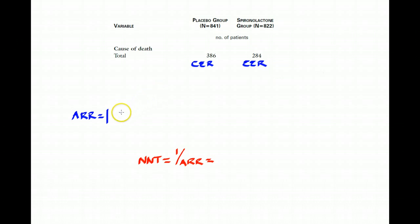And so the formula for an absolute risk reduction is just the absolute difference between the control event rate and the experimental event rate.